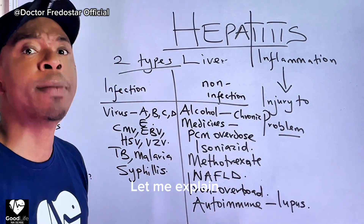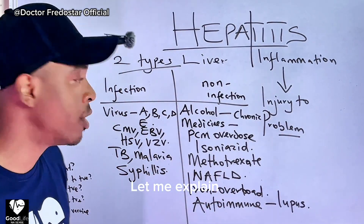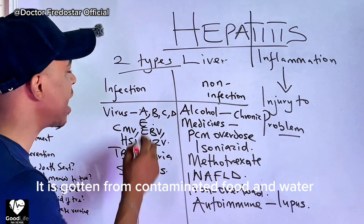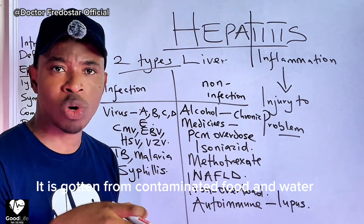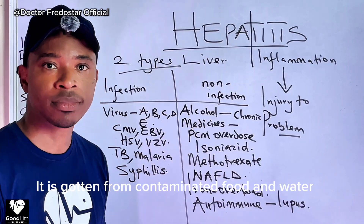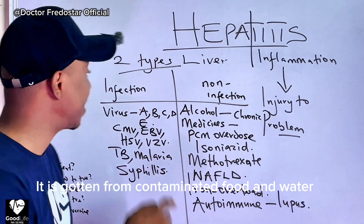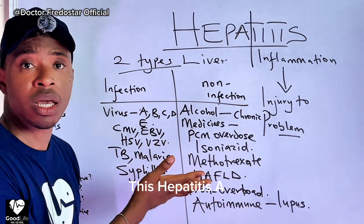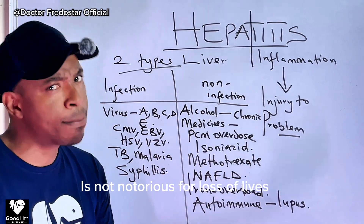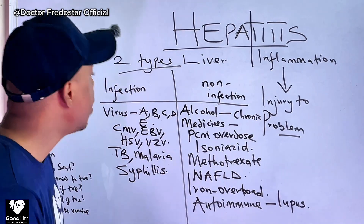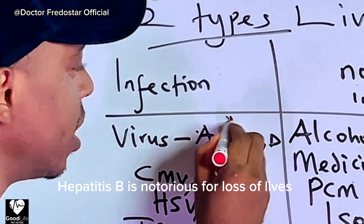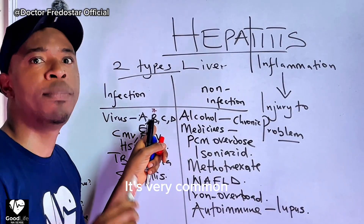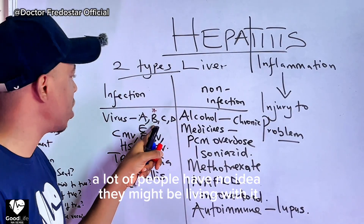So let me explain the types of hepatitis. Hepatitis A comes from your food and water — that is how you get hepatitis A. Now hepatitis B — this one has affected many people, and many people don't know they have it in their body.